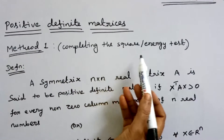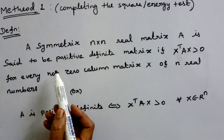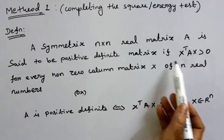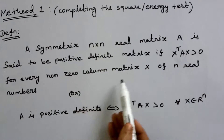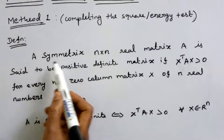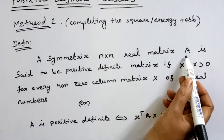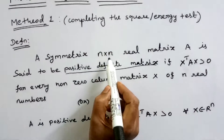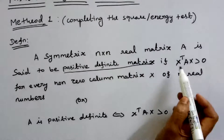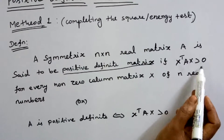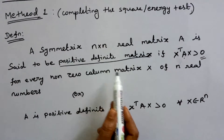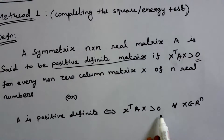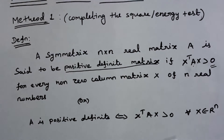A symmetric n by n real matrix A is said to be a positive definite matrix if x-transpose Ax is greater than 0 for every nonzero column matrix x of n real numbers. Given matrix A, we can say A is positive definite if and only if x-transpose Ax is greater than 0 for every x belonging to R^n, where R^n is the n-dimensional vector space. Let's see an example.